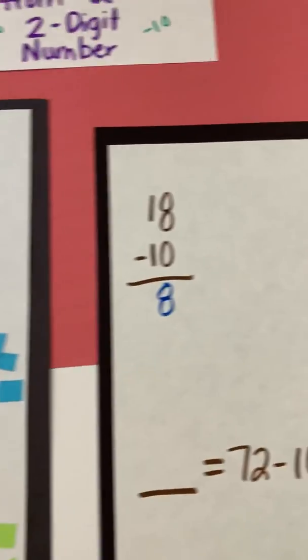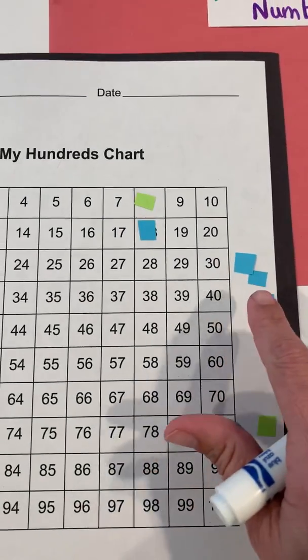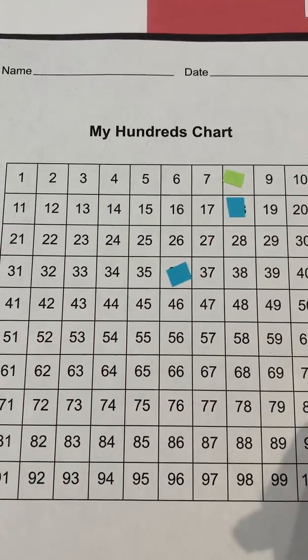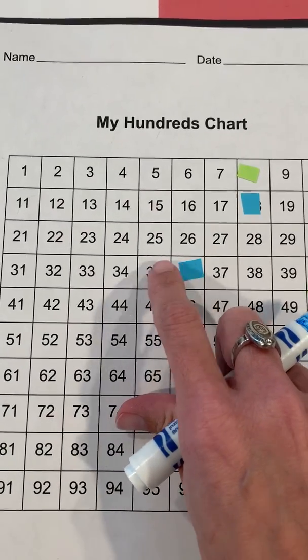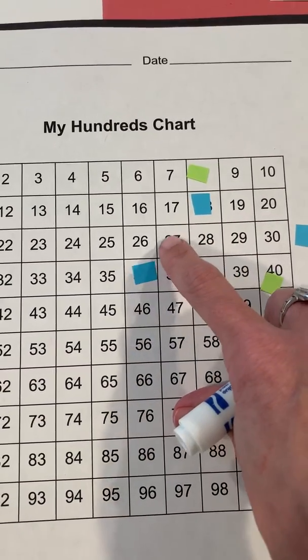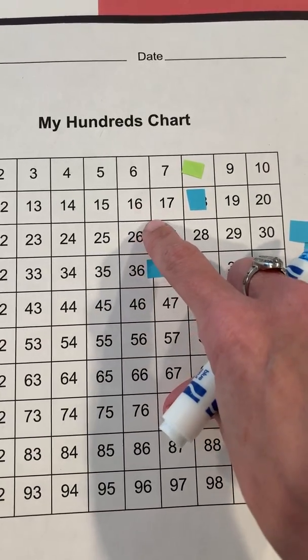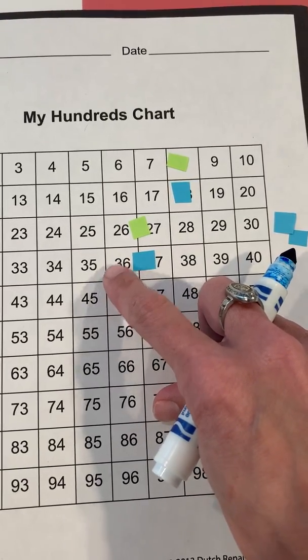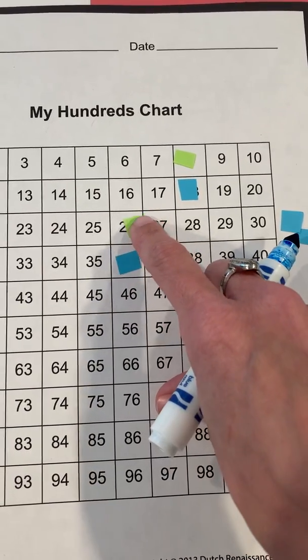So let's look at another one. We have 36 minus 10. So I'm going to use my little blue piece to represent 36. And I'm going to subtract 10. So once again, I have to jump off for it to count. One, two, three, four, five, six, seven, eight, nine, 10. So 26. So 36 minus 10 is 26. Look at the digits that are in the ones place compared to the digits that are in the tens place from 36 to 26. What are you noticing? Keep that in mind.